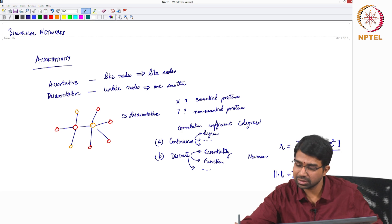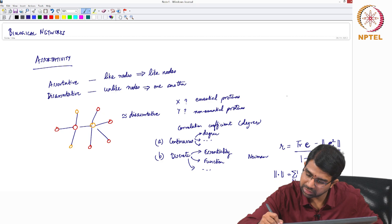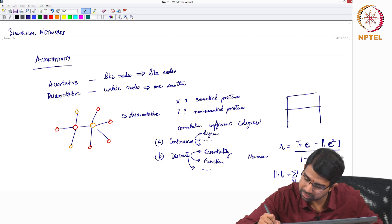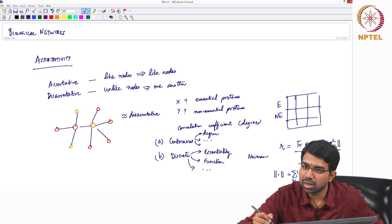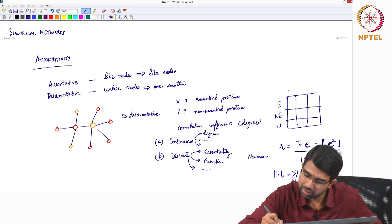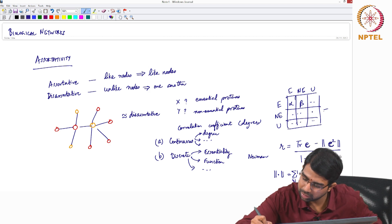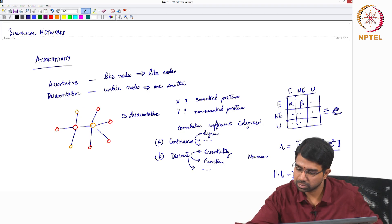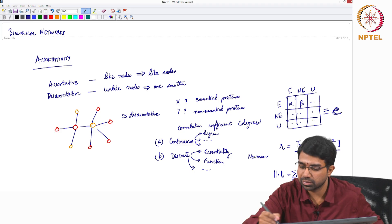And what is this matrix in the first place? It is a matrix structured like this. Let us say this is essential, non-essential and the unknown, three classes. This is essential, non-essential, unknown. It will have some value here, some value here, and so on. This is your E matrix, and this is the trace of the matrix which is essentially...